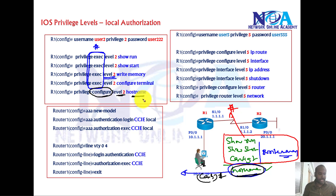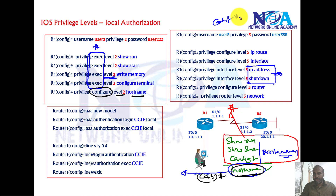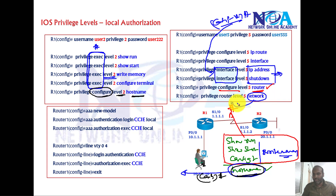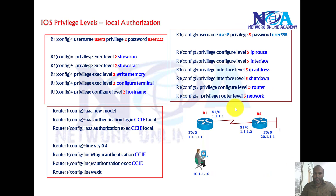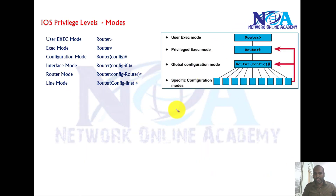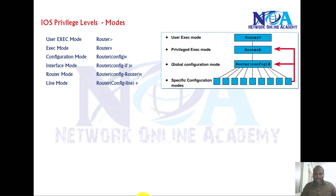Likewise, if you're defining commands that come under the interface level, you use 'privilege interface'. Commands in router mode use 'privilege router'. You need to know which command comes in which mode, and based on that, specify that mode when assigning privilege levels. You can use question marks to find the next available options.